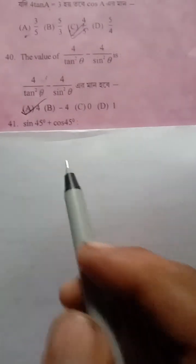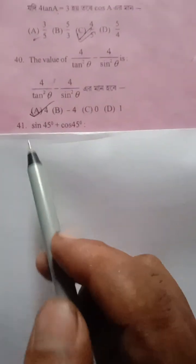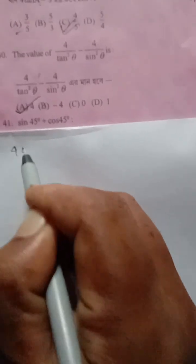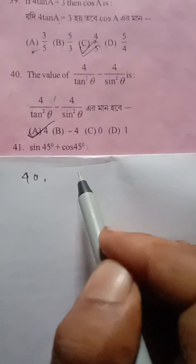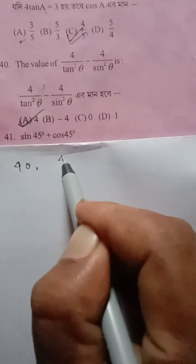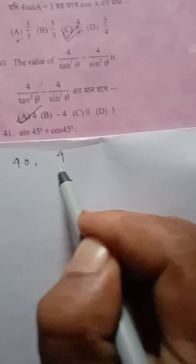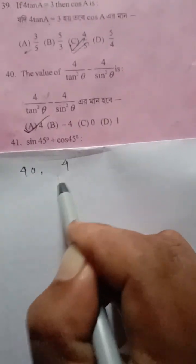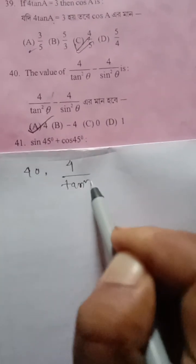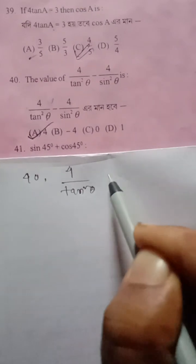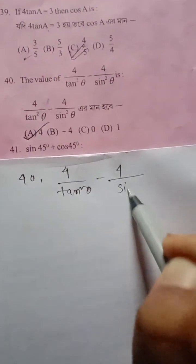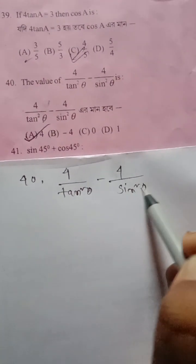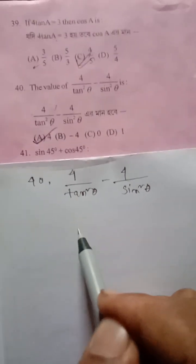We are continuing this question paper. Question number 40: find the value of 4 by tan squared theta minus 4 by sin squared theta.